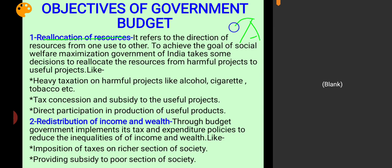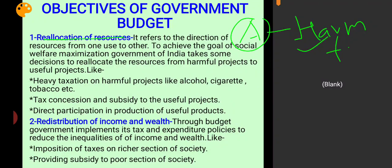Suppose industry A produces harmful products. If the government of India allows industry A to continue producing harmful products, the social welfare of the economy will decrease, which the government would not allow. The main goal of government of India is social welfare maximization, so it will try to release the resources used in production of harmful product A and redirect them to the production of useful product B.